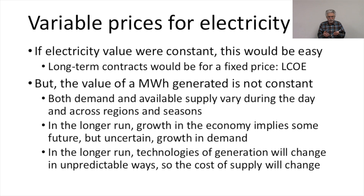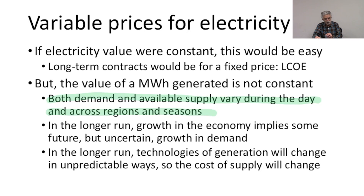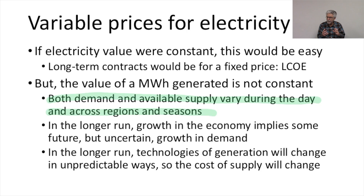But life is more complicated than that. The value of a given megawatt hour generated now or in the future is not constant. The value of megawatt hours will vary based on both the demand and the supply of electricity, and those vary throughout the day, across regions, and across seasons, and across the years when the power plant will be in service. So electricity prices have patterns of variation — some in the very short run within a day, some within weeks and seasons, they vary across geographic regions, and over long periods of time as well.